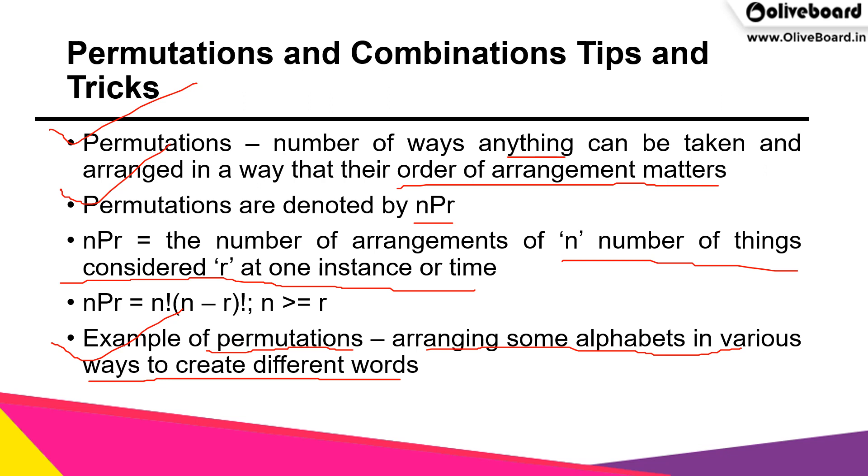Permutations are denoted by nPr. nPr is the number of arrangements of n things considered r at one instance. It's like saying I have 26 alphabets and can arrange them in a certain number of ways. Always n is greater than r. nPr equals n! / (n-r)!